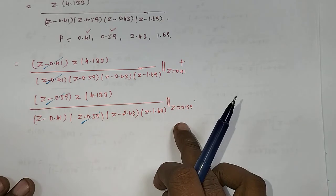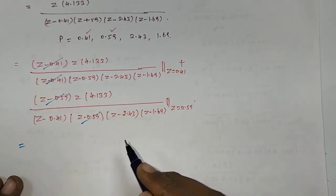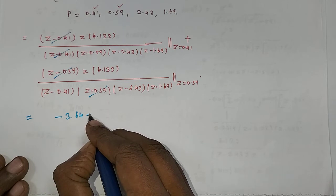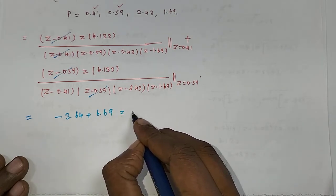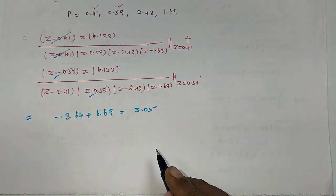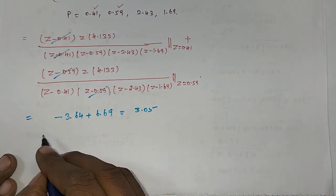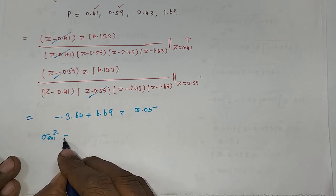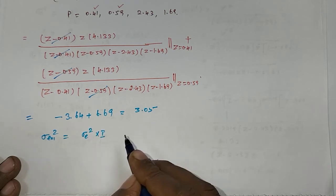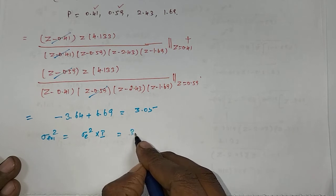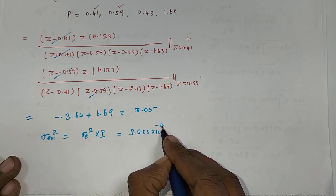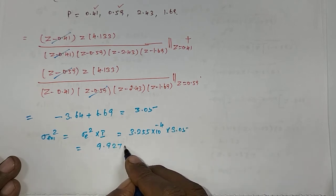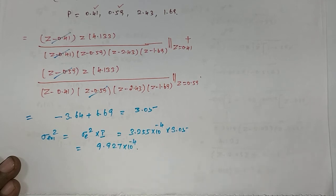After applying the residuals for poles z = 0.41 and z = 0.59, the values after simplification are -3.64 + 6.69 = 3.05. So the noise variance due to error signal 1 is σ²_EO1 = σe² × I = 3.255×10⁻⁴ × 3.05 = 9.927×10⁻⁴.